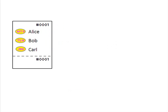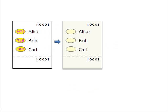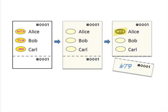The key idea in Scantegrity 2 is the ballot. It's similar to a regular optical scan ballot, except there are confirmation codes written inside the optical scan bubbles. The codes are printed in a special invisible ink, so when the voter initially receives the ballot, they cannot see the codes. But by using a special pen to mark their selections, the confirmation codes are revealed. The voter is able to write down this code on a special detachable receipt portion and retain it for future reference.